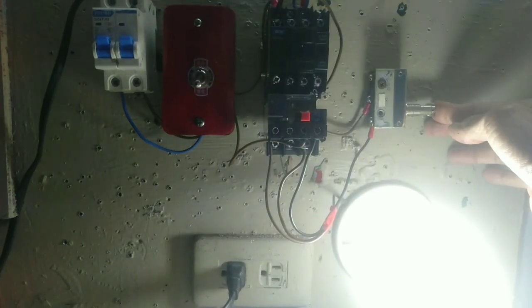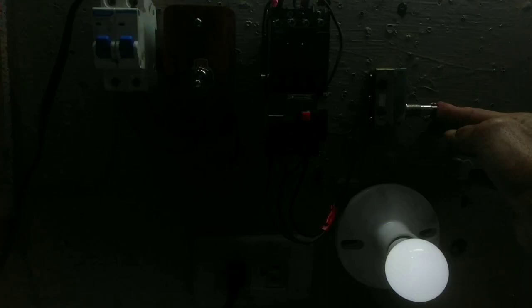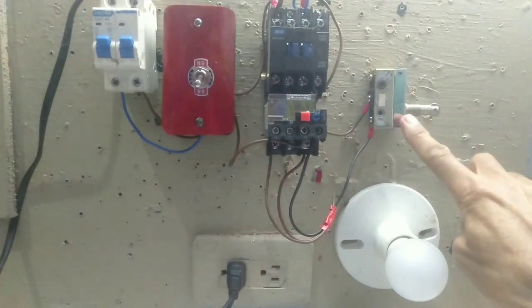The contactor activates. When you release it will turn off because we used a normally open contact. That's the function of the limit switch. Next is the wiring connection.